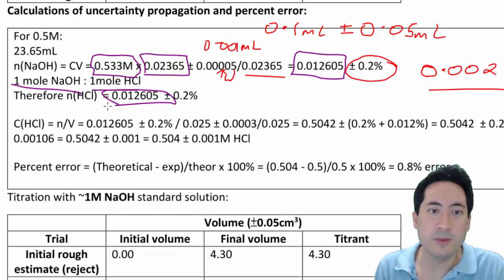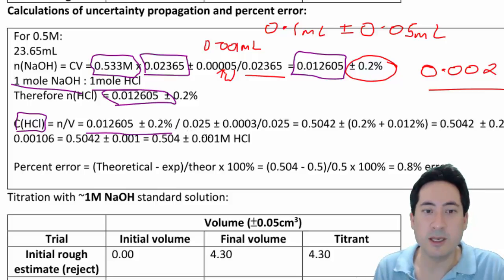So there we have the number of moles is 0.012605 plus or minus 2%. We can take that down here. We're now trying to work out what the concentration of the HCl is. That's number of moles over volume. So we've just worked out the number of moles here by doing the titration, and what we actually had was we pulled out 25 mils of the stuff and we used that using a volumetric pipette.